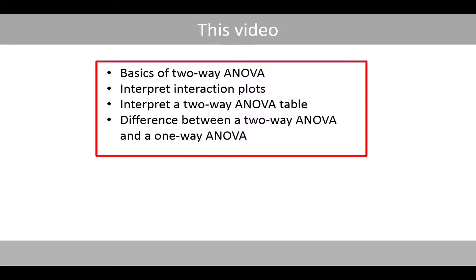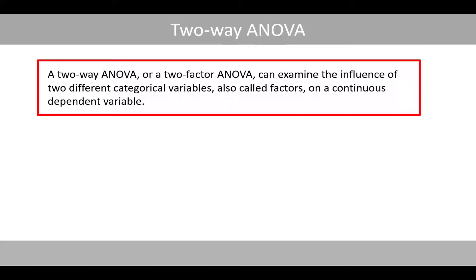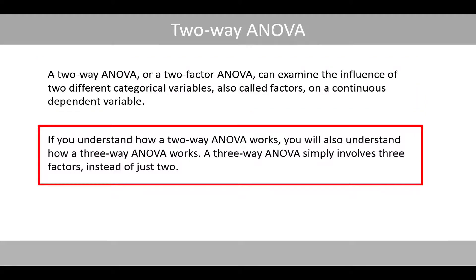We'll also interpret the two-way ANOVA table and discuss the differences between a two-way ANOVA and a one-way ANOVA. A two-way ANOVA, or a two-factor ANOVA, can examine the influence of two different categorical variables, also called factors, on a continuous dependent variable. If you understand how a two-way ANOVA works, you will also understand how a three-way ANOVA works. A three-way ANOVA simply involves three factors instead of just two.